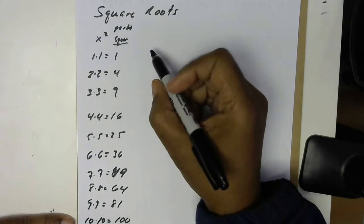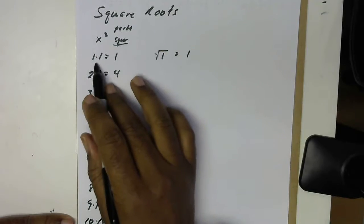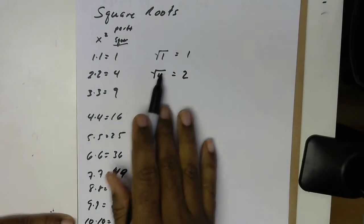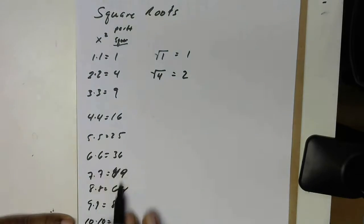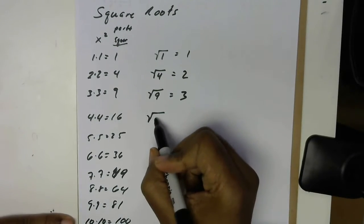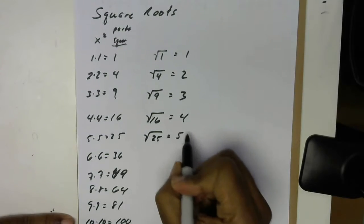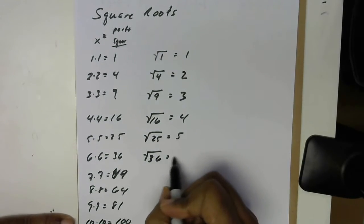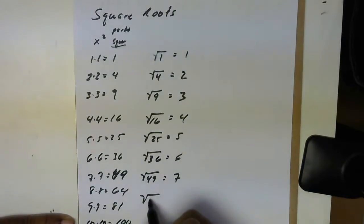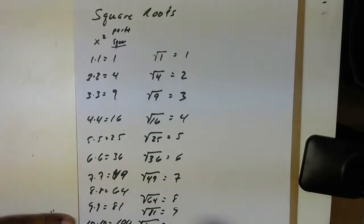Let's take the square root of 1 — you get 1. It turns the 1, which came from two 1s, into one single 1. The square root of 4 becomes 2. The square root of 9 is 3. The square root of 16 gives you 4. The square root of 25 is equal to 5. The square root of 36 is equal to 6. The square root of 49 is equal to 7. The square root of 64 is equal to 8. The square root of 81 is equal to 9. And the square root of 100 is equal to 10.